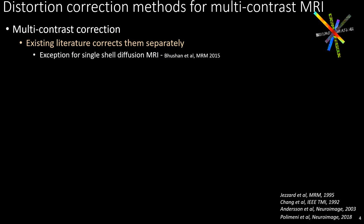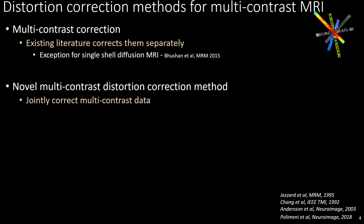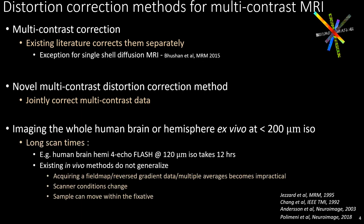Current distortion correction methods mostly correct each contrast separately. In this work, we present a new multi-contrast correction method that takes into account all data jointly for correction. We also present results of applying the method to ex vivo MRI of the human brain hemisphere, for which existing in vivo methods can become impractical due to long scan times.